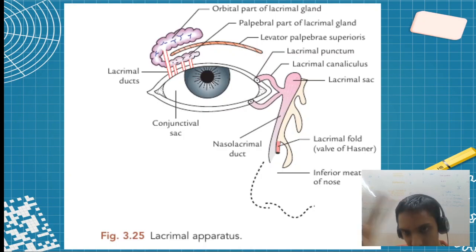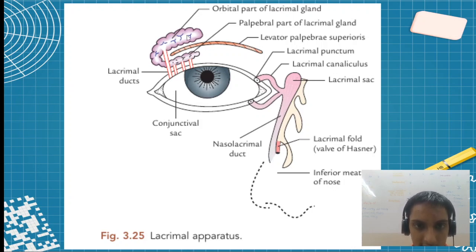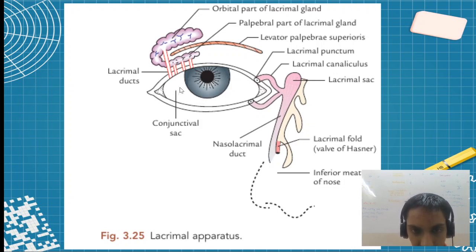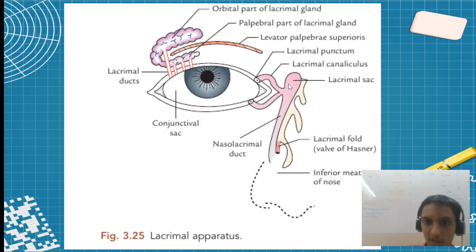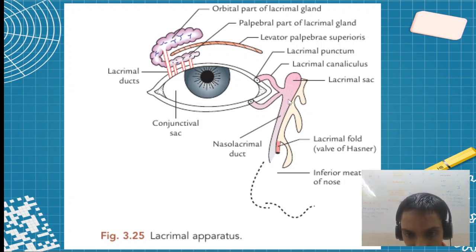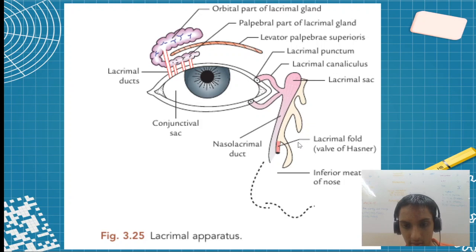Let us see the components. The lacrimal gland has an orbital part and a palpebral part. There is the LPS muscle — elevator palpebrae superiores. We can see the lacrimal ducts and the conjunctiva. Remember PCS: punctum, canaliculus, and the sac. Then the nasolacrimal duct, the valve of Hasner, and the lacrimal fold.